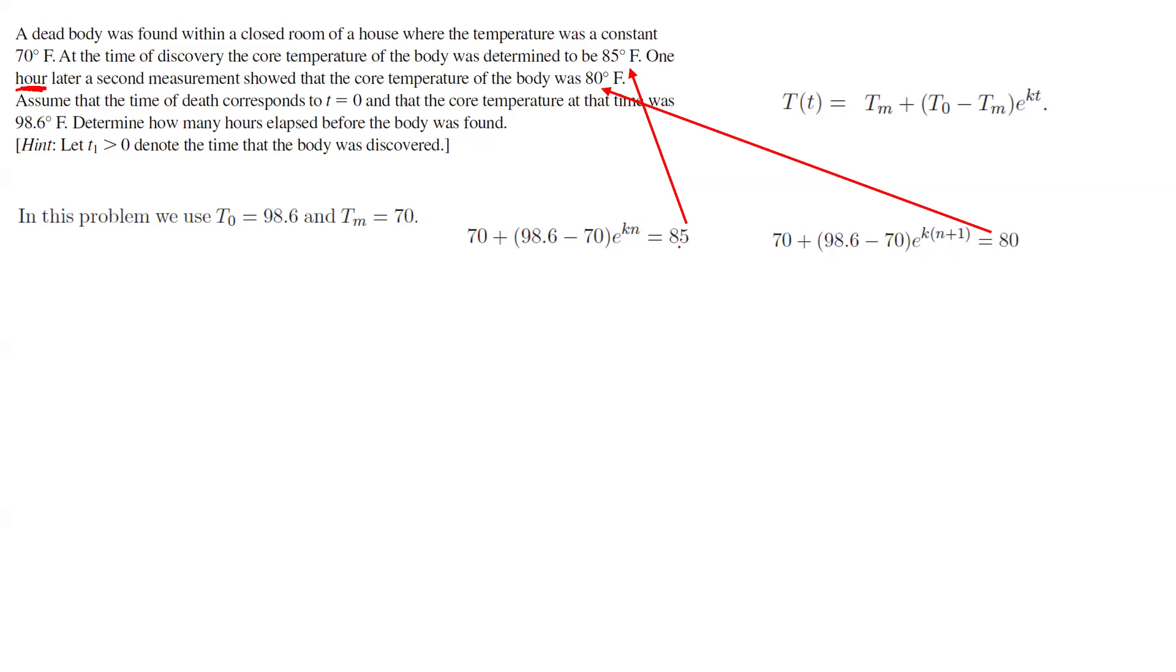Now we're going to do a little bit of algebra. We're going to bring 70 to the other side and simplify as much as we can. If you bring 70 to the other side, you get 15. And then the subtraction between 98.6 and 70 is 28.6. We have e to power Kn. So 28.6 e to power Kn is equal to 15. We're going to substitute this here.